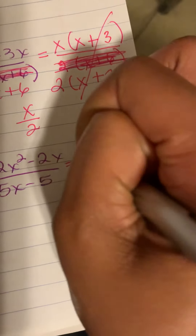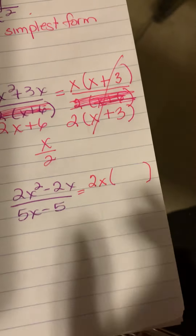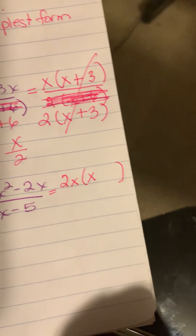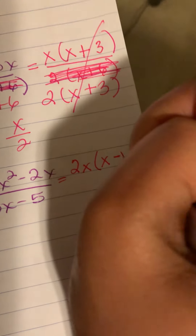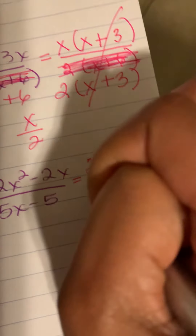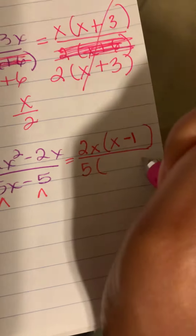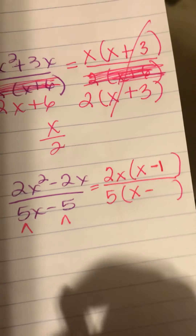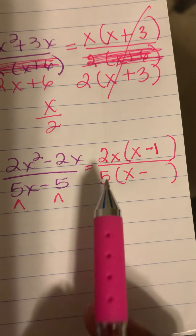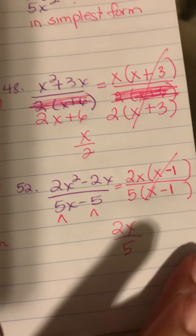Number 52: I can factor out 2x using the factor tree. I need 2x squared — I have 2x, just missing one more x. Bring down the minus sign. I need 2x — I have 2x, so I put a one as a placeholder. Factor tree for the denominator gives five. I need five x — I have five but I'm missing the x. Five times one gives five. Cancel it out and the answer is 2x over five.